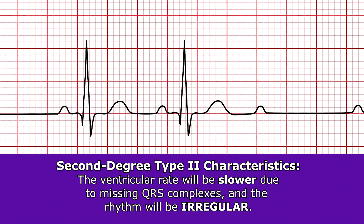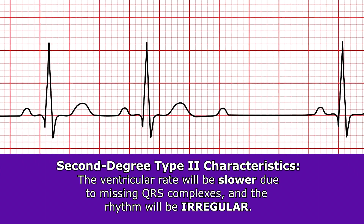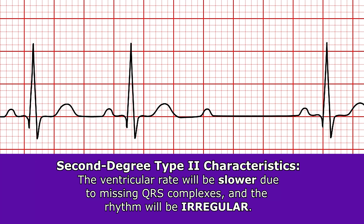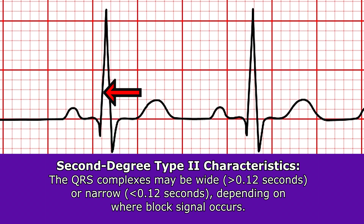The ventricular rate will be slower, less than 60 beats per minute, because we're missing some QRS complexes, which throws off our ventricular rate. The ventricular rhythm will be irregular for that same reason. When QRS complexes do appear, they can be wide — greater than 0.12 seconds — or narrow — less than 0.12 seconds — depending on where the block is within the conduction system.